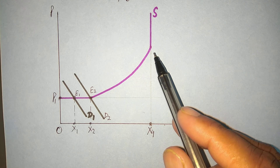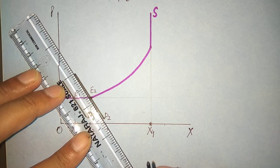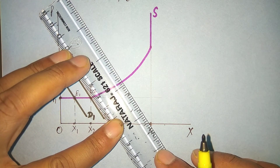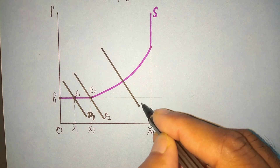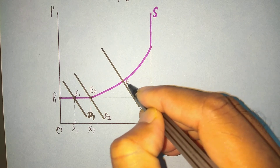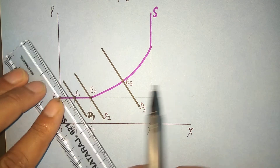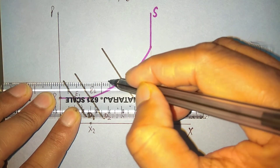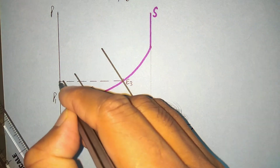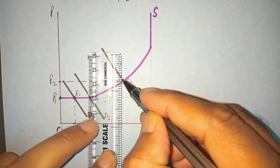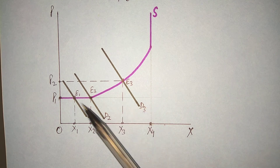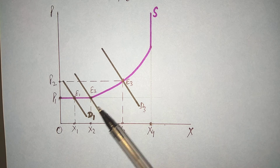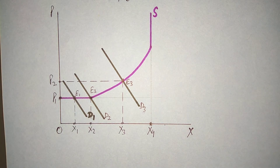But after this, when demand rises further from D2 to D3, the new equilibrium is E3. Now you can see that price rises from P1 to P2, and the new equilibrium quantity is X3. As demand increased, supply was not perfectly elastic, so demand pulled the price along with it — that is why we call it demand-pull inflation. Demand increased, and price also increased along with it.